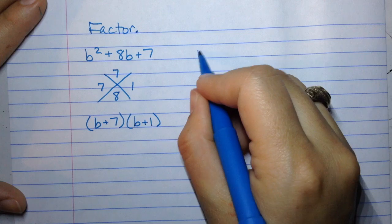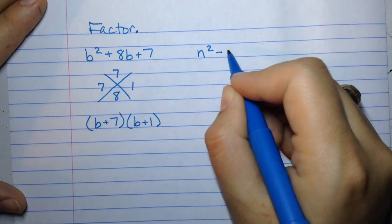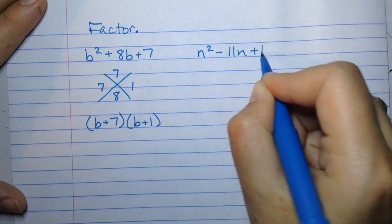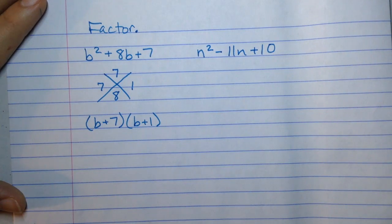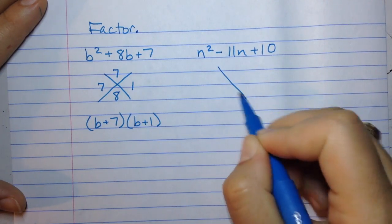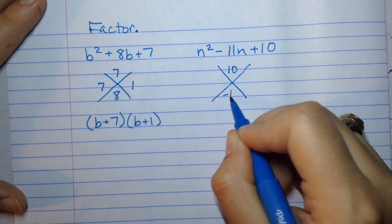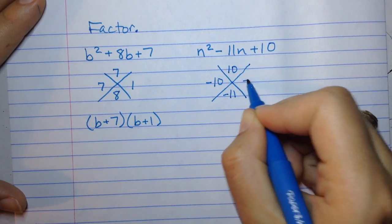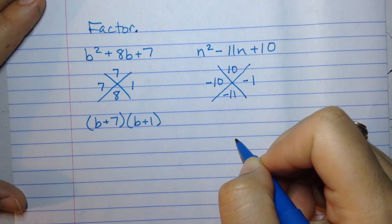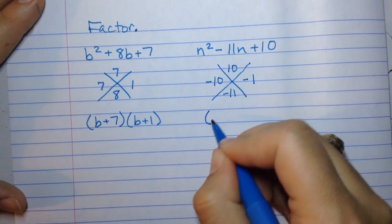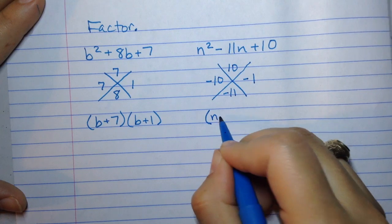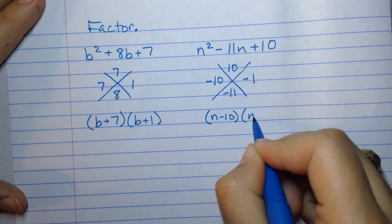The second problem for you to try is n squared minus 11n plus 10. Right now, pause this video and give it a shot. Let's check your work. 10 in the top, negative 11 in the bottom. The only thing that adds to negative 11 and multiplies into 10 is negative 10 and negative 1. So this polynomial will factor to (n minus 10)(n minus 1).